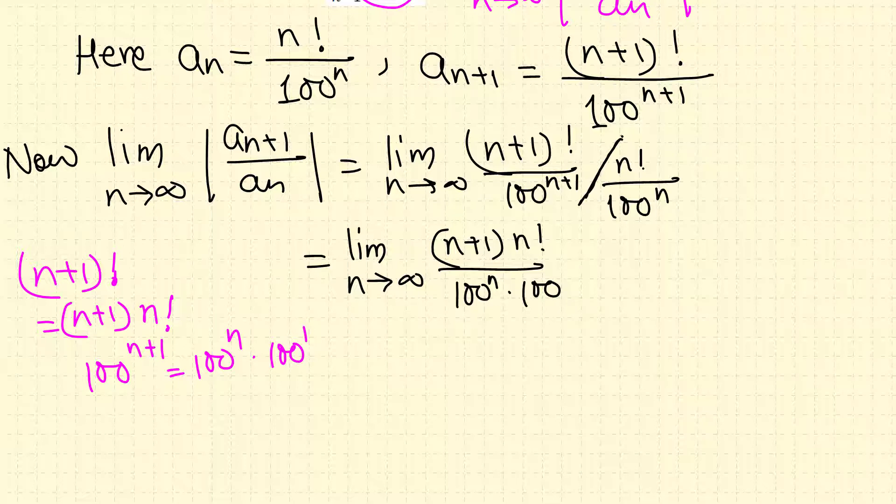Now we change this division into multiplication, so this fraction flips: 100 raised to n on top, all over n factorial.